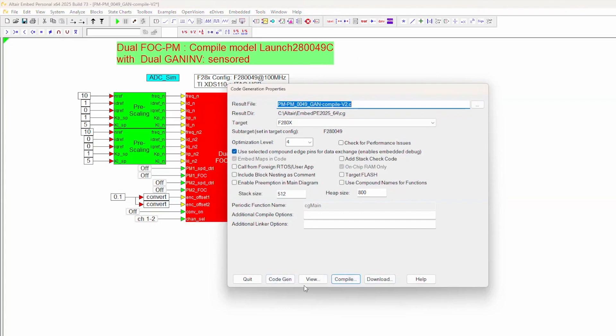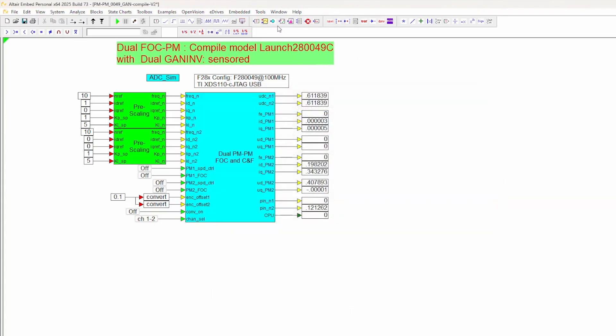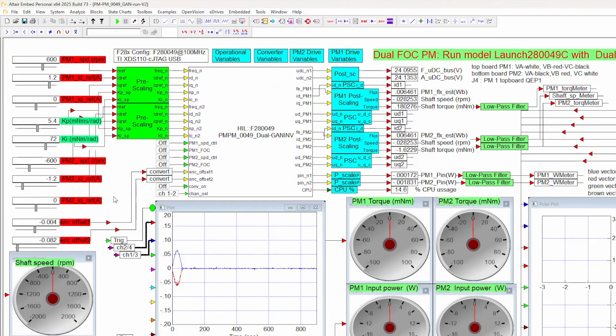We have to select it, edit tools, do code gen, compile and download. We've done that. The run file is the one we need to do next, and that is what controls the entire drive. The run file has a number of settings: PM speed control, FOC for PM1, for PM2 speed control, PM2 FOC.